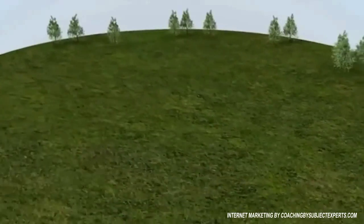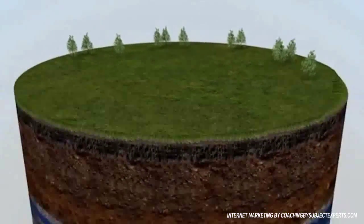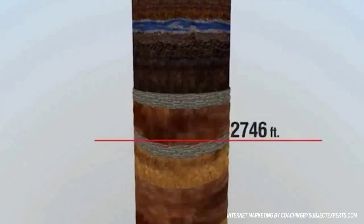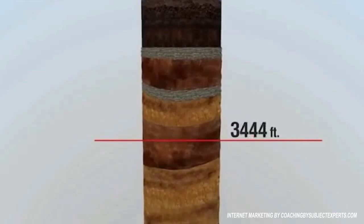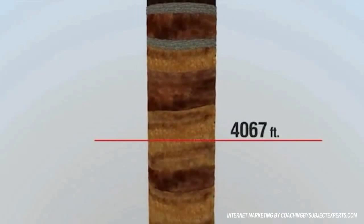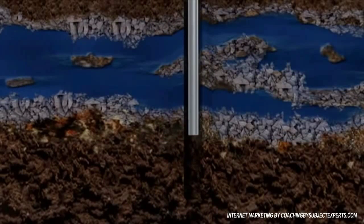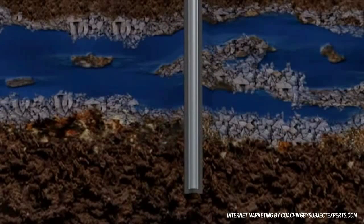Shale reservoirs are usually one mile or more below the surface, well below any underground source of drinking water, which is typically no more than 300 to 1,000 feet below the surface. Additionally, steel pipes called casing, cemented in place, provide a multilayered barrier to protect freshwater aquifers.